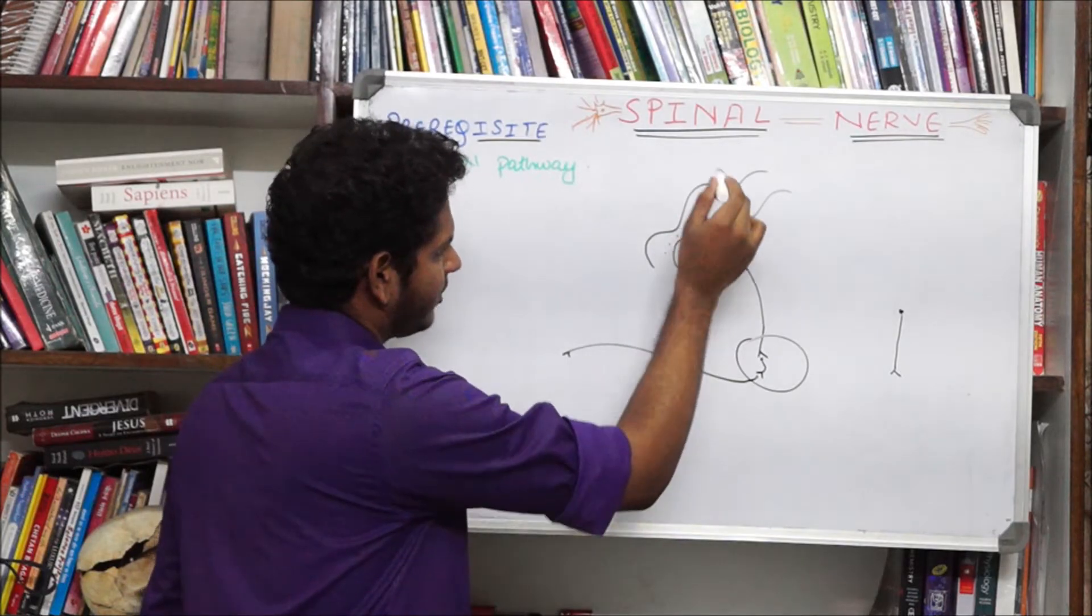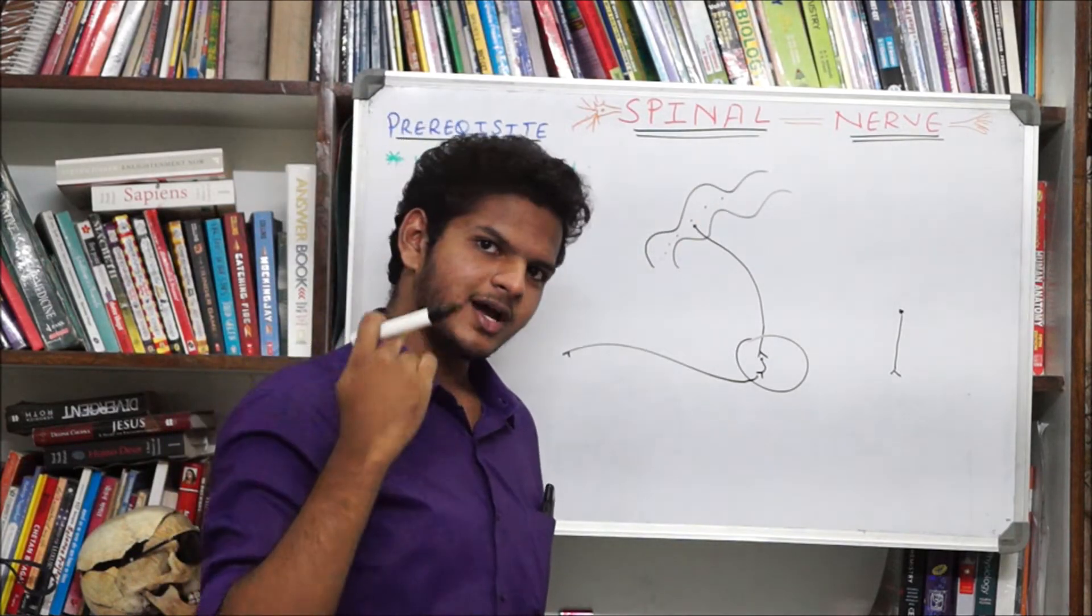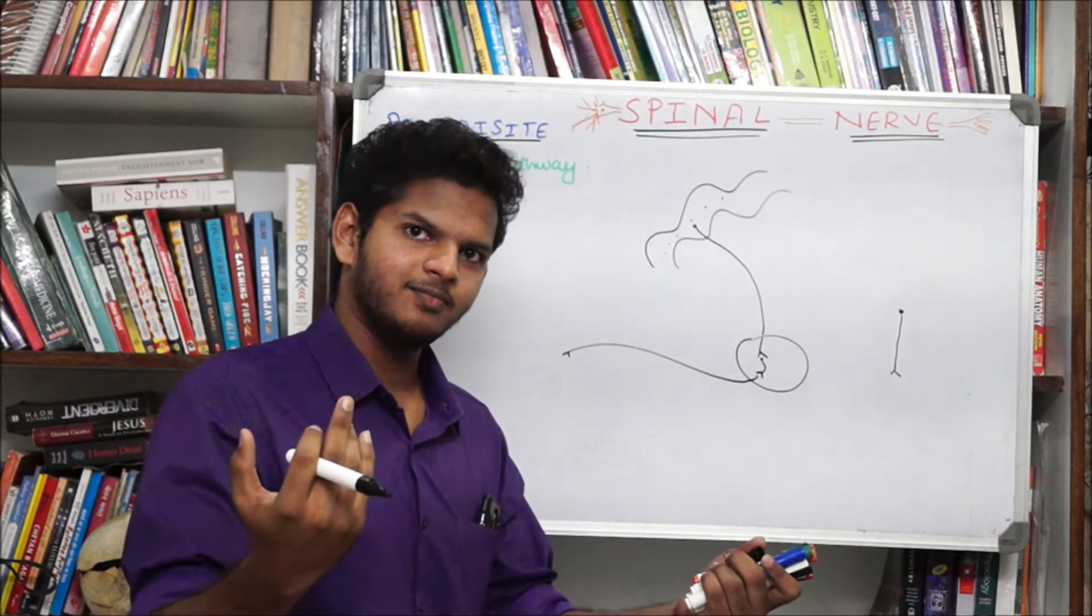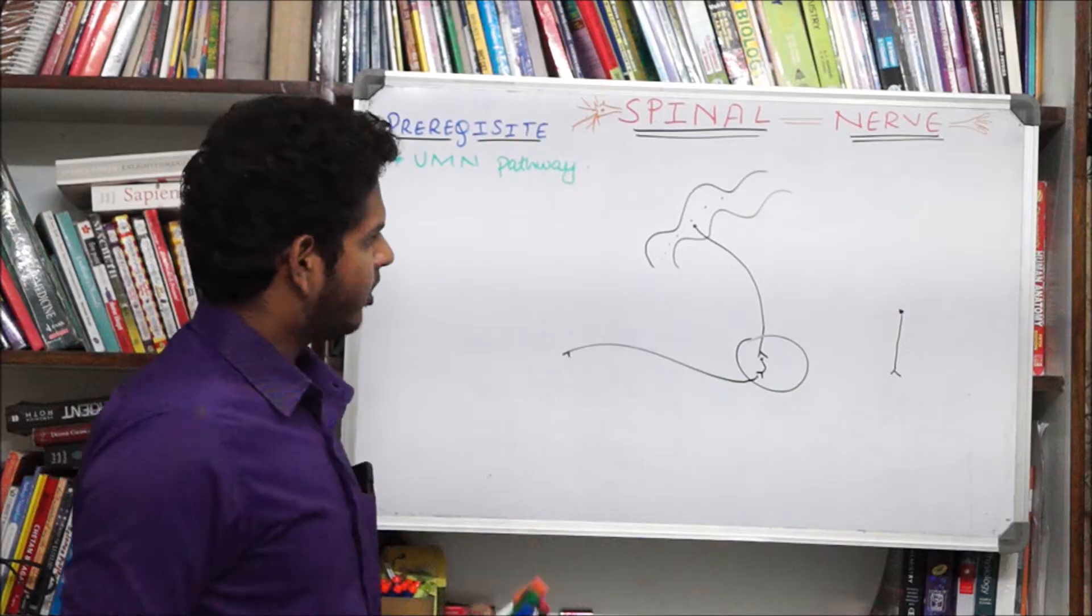So an idea generated in the cortex goes via the spinal cord, via the spinal nerves to finally the muscles and the organs executing it. So that was the upper motor neuron pathway.